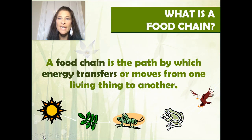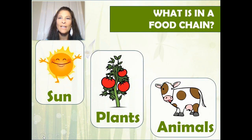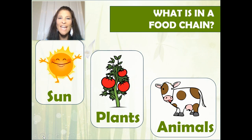A food chain is the path by which energy transfers or moves from one living thing to another. What is in a food chain? It all begins with the sun. The sun gives its energy to plants, and plants give their energy to animals.